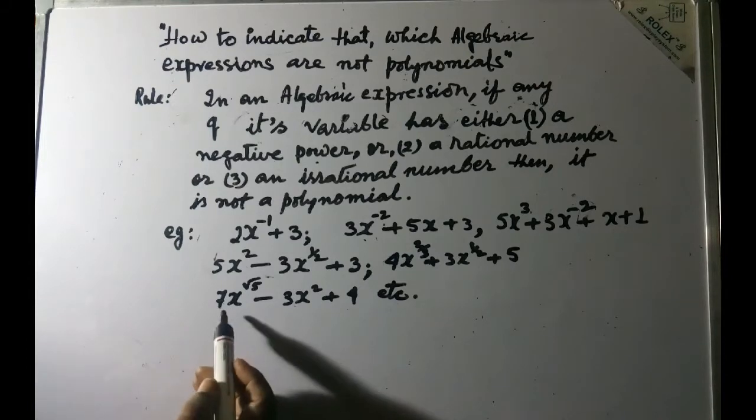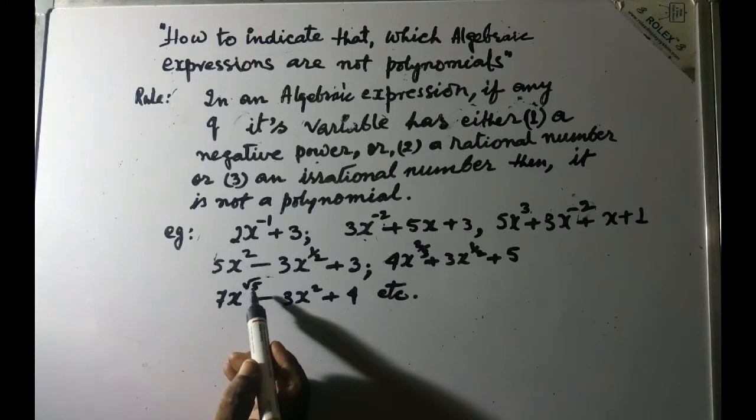Now the third example here you have is 7x to the power of root 5. What is root 5? Root 5 is an irrational number.